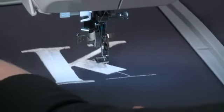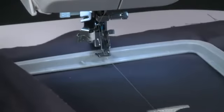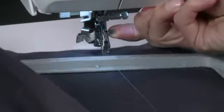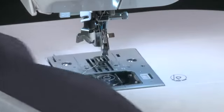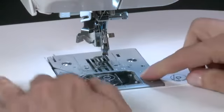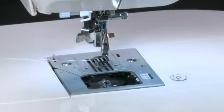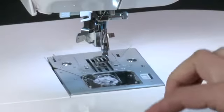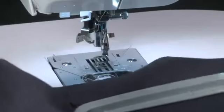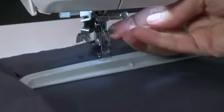To replace bobbins during the embroidery process, raise the presser foot lifter, remove the hoop from the machine and trim the thread, but do not remove the fabric from the hoop. Replace the bobbin, reattach the hoop, lower the presser foot, then continue.